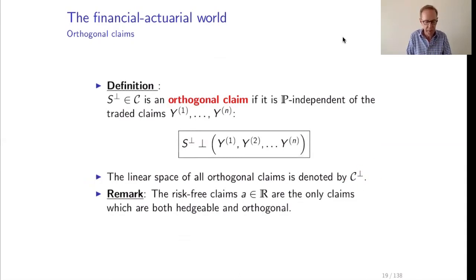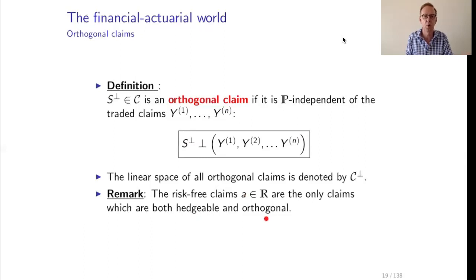The linear space of all orthogonal claims is denoted C-orthogonal. Now a remark: are there claims which are both hedgeable and orthogonal? The answer is yes. Any risk-free claim A, a real number, is both hedgeable and orthogonal. This risk-free claim can be hedged by zero coupon bond investment and is also orthogonal because it is independent of the financial market information. These are the only claims that are both hedgeable and orthogonal.